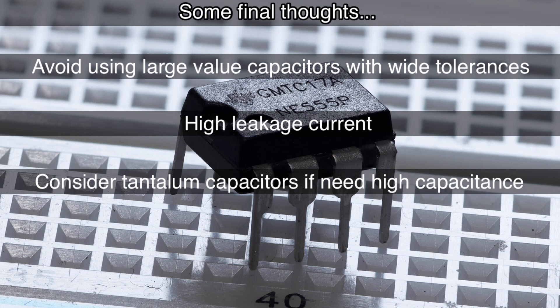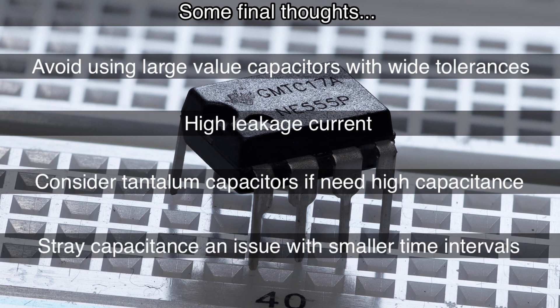On the opposite end of the capacitance spectrum is if you're using values less than say 100 picofarads to generate a very short pulse. Stray capacitance in the circuit itself can become an issue that affects timing, so something else to consider.